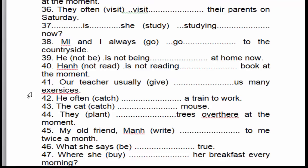Giáo viên của chúng tôi thường cho chúng tôi nhiều bài tập. 'Usually' là dấu hiệu nhận biết của thì hiện tại đơn. 'Our teacher' là chủ ngữ số ít, cho nên động từ này chúng ta sử dụng thêm 's'.